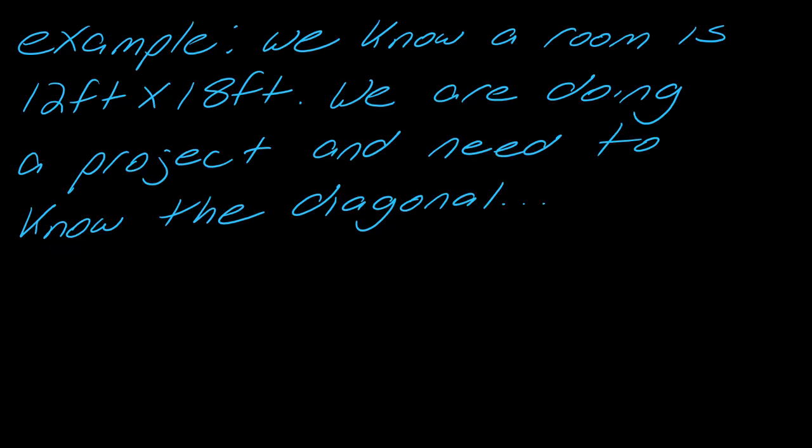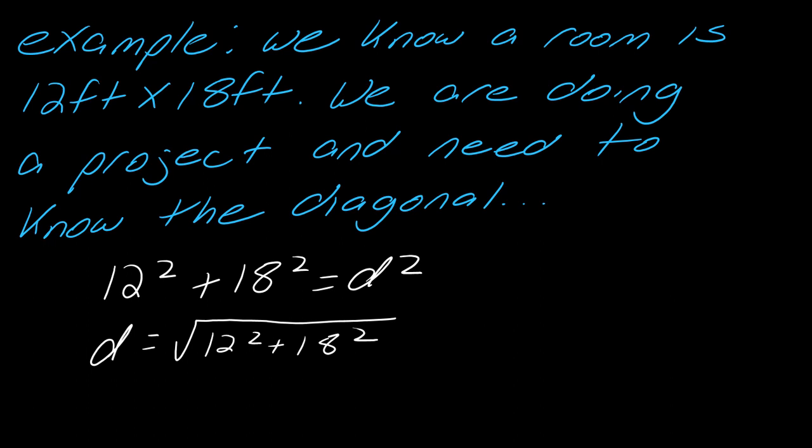The first is a number that comes from counting stuff - when you count, that's considered by definition an exact number. Or it's the result from theoretical work and not from measurement. Here's an example: we've got this room, 12 feet by 18 feet, and we're doing a project and need to know the diagonal. We can treat this as a triangle. 12 squared plus 18 squared equals d squared.